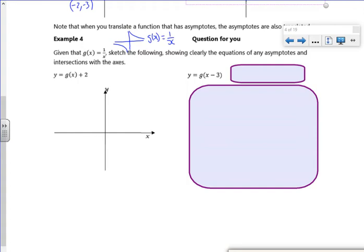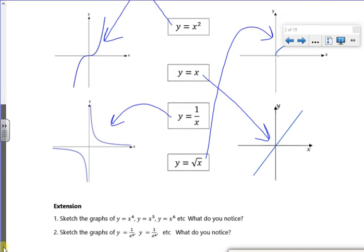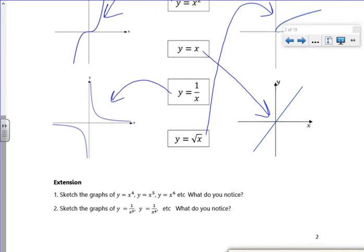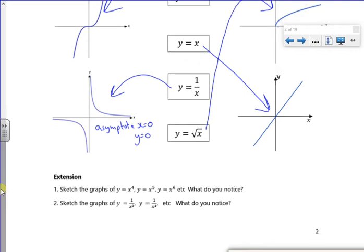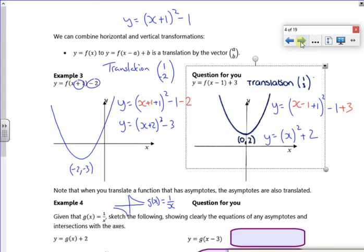I almost think we should maybe add that to the graph. So if you look here, this has got it ceases to exist on the x axis and the y axis. So it has an asymptote x equals zero, which is the y axis, and y equals zero, which is the x axis. So we need to think about where they go, and we traditionally draw them with dotted lines on.